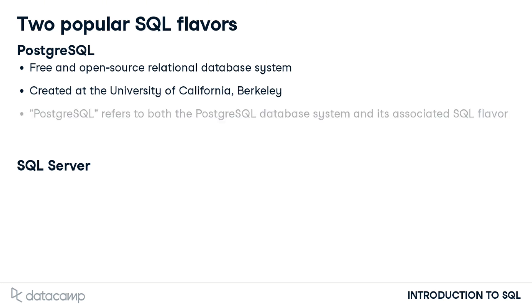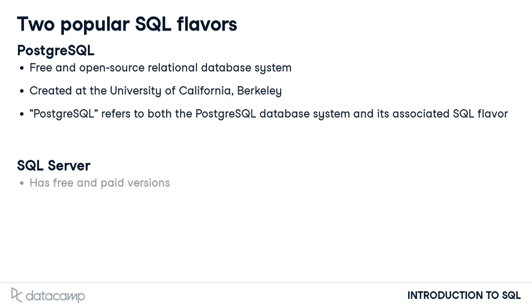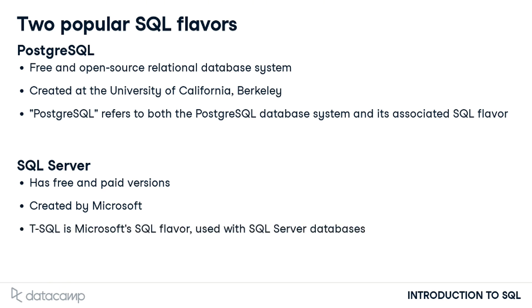The name PostgreSQL is used to refer to both the database system itself as well as the SQL flavor used with it. SQL Server is also a relational database system that comes in both free and enterprise versions. It was created by Microsoft, so it pairs well with other Microsoft products. T-SQL is Microsoft's proprietary flavor of SQL used with SQL Server databases.